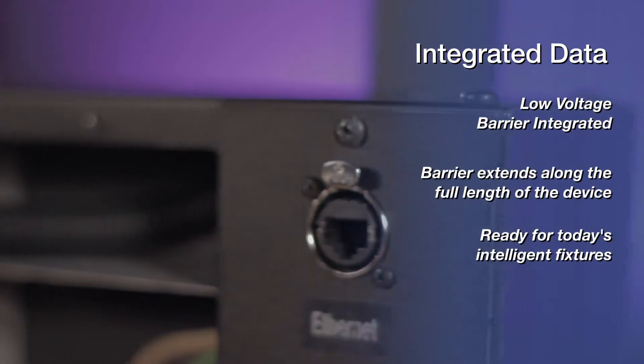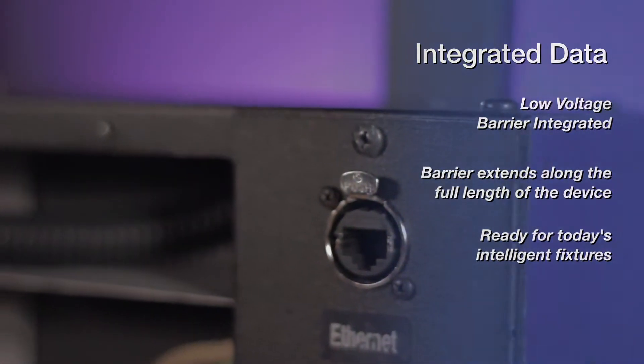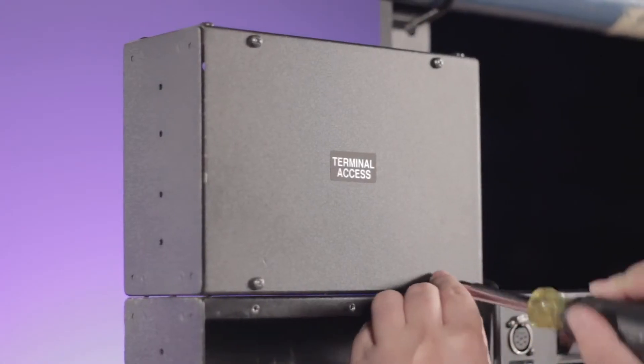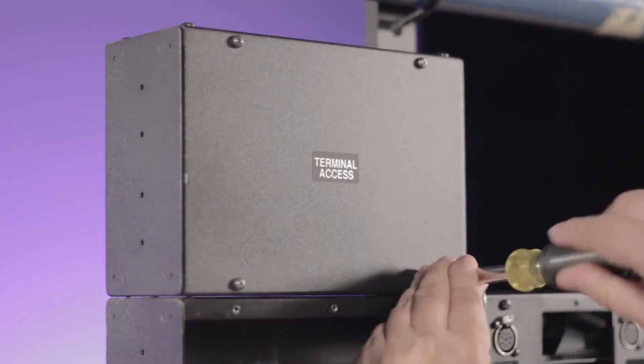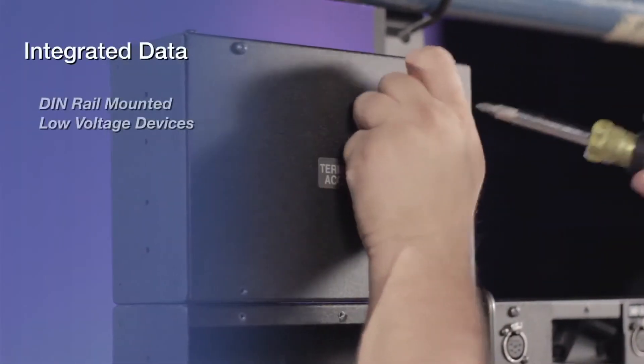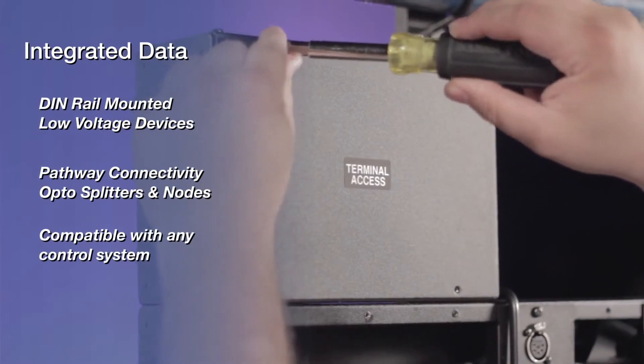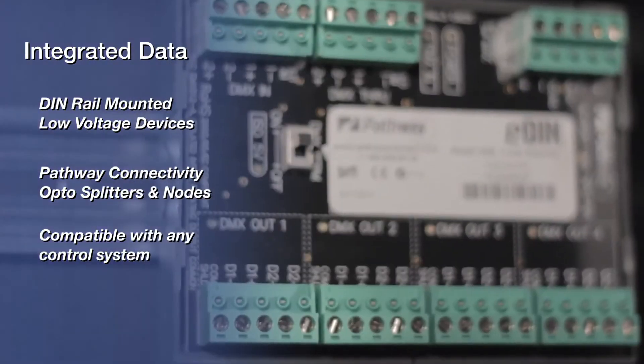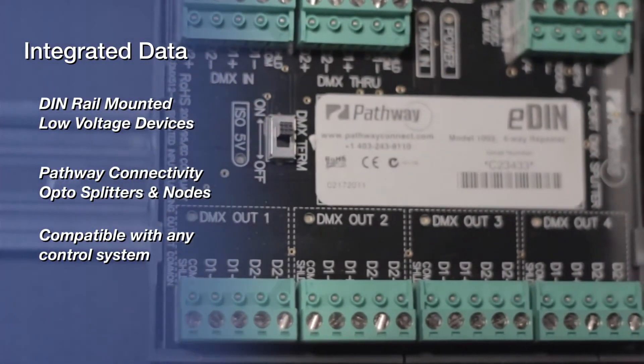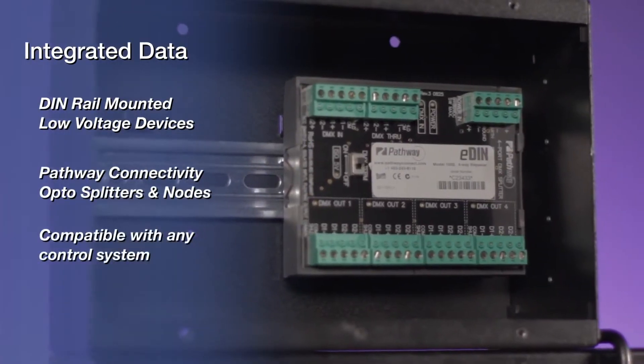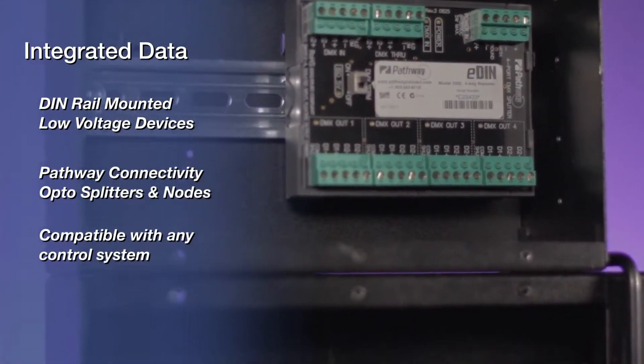These barriers allow distribution of low voltage DMX and CAT5 data cables along the length of the connector strip or plug box to integrate with today's modern moving and LED lighting systems. In Altman 450 connector strips, the cabling in the low voltage barrier originates from a DIN rail mounted control box. This control box allows for integration of pathway connectivity DMX 512, RDM optosplitters, ethernet nodes, and other DIN rail mounted control devices.